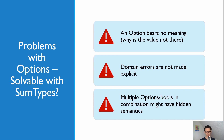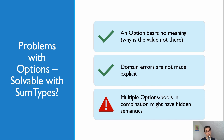This brings us to the summary of the series. The first problem was that an option bears no meaning — there's no information about why the value is absent. Sum types fix this by providing explicit cases. The second problem was that domain errors are not made explicit with none/option or even Result types. Again, sum types solve this clearly. And the third problem, which this whole video covered, is that multiple options and booleans in combination create hidden semantics — and with sum types and discriminated unions it's very easy to make those implicit semantics explicit.